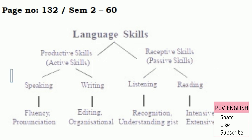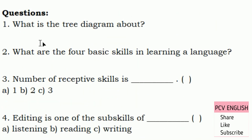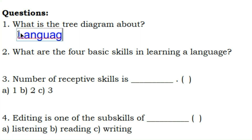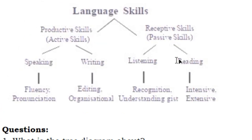Question: What is the tree diagram about? It is about language and skills. What are the four basic skills in learning a language? There are four basic skills — active and passive. But there are four total skills.